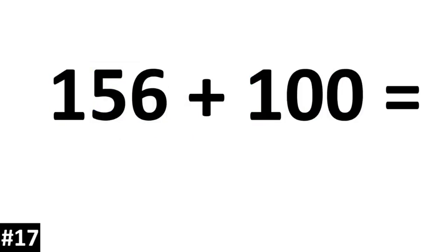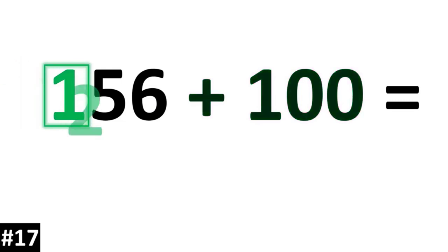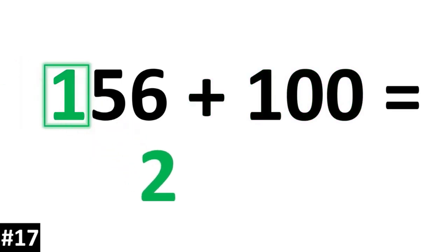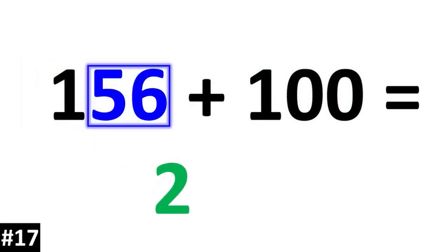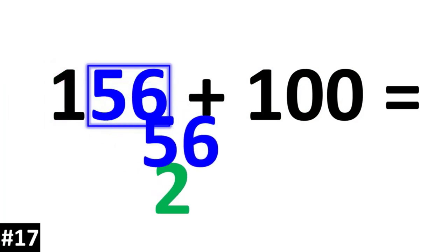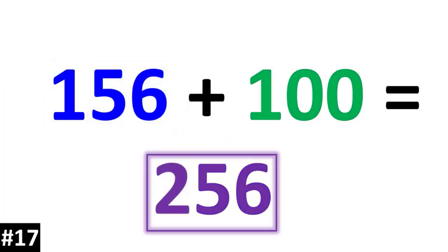156 plus 100. If we add by 100, the hundreds digit of 1 is going to go up to 2. The other numbers stay the same, so 156 plus 100 is 256.